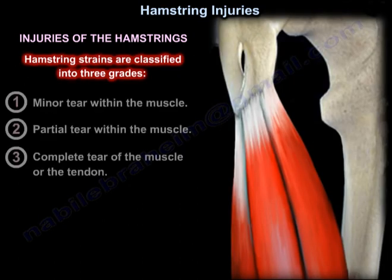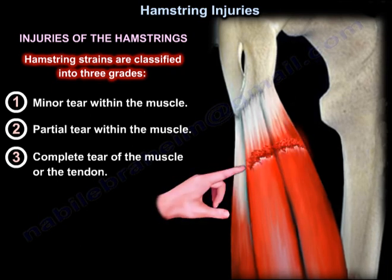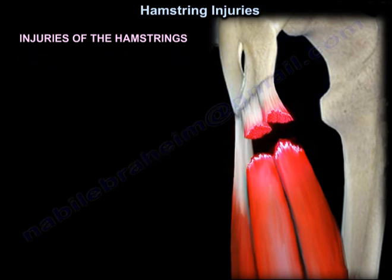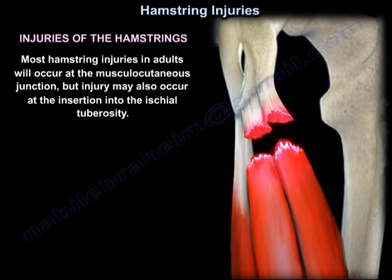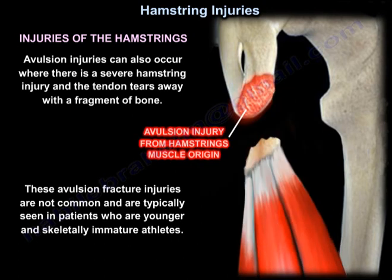Hamstring strains are classified into three grades: a minor tear within the muscle, a partial tear within the muscle, or a complete tear of the muscle or tendon. Most hamstring injuries in adults occur at the musculotendinous junction, but injury may also occur at the insertion into the ischial tuberosity. Avulsion injuries can also occur where the tendon tears away with a fragment of bone; these are not common and are typically seen in younger, skeletally immature athletes.